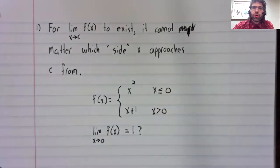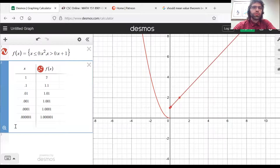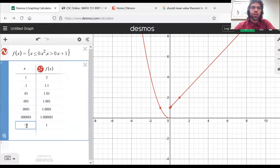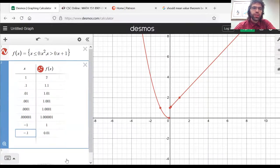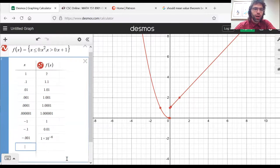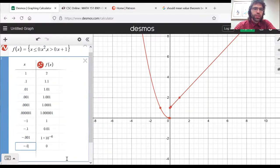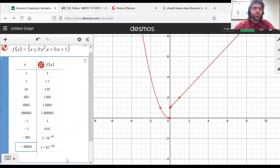However, let's now approach zero from the other direction. We'll start at negative one, then negative point one, negative point zero zero one, negative point zero zero zero one.